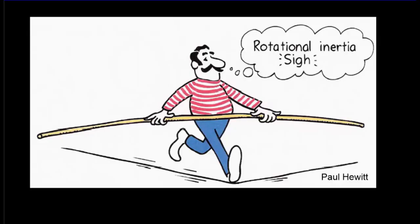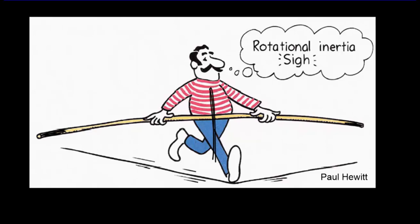Tightrope walkers know a lot about rotational inertia. They don't carry that long stick just to show off — it's not like, 'hey, I can walk, chew bubblegum, and carry a long stick all at the same time.' That's not what's happening. In fact, the stick will be loaded with weights at the end. Those weights are going to be a long way from the axis of rotation. So thinking of the system of the man plus the stick, that system has more rotational inertia — it's more stable, it's harder to rotate. And rotating is what the tightrope walker does not want to do, because for him, rotation means falling off the rope.